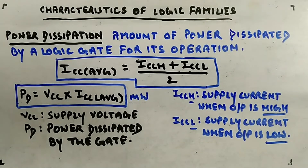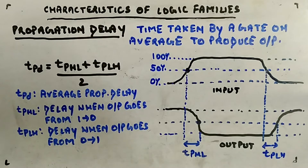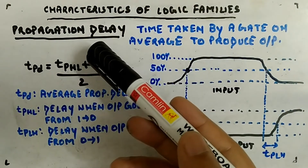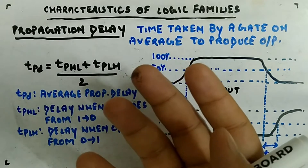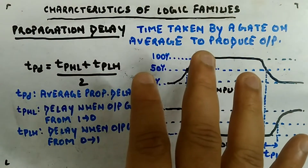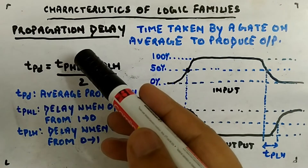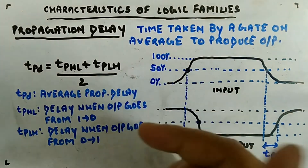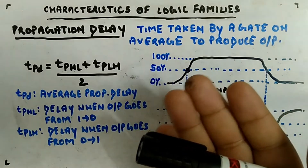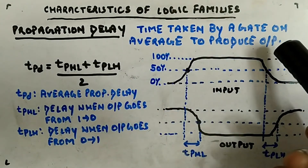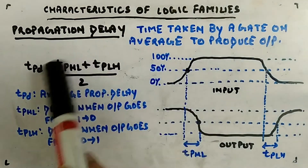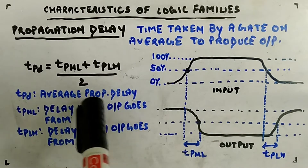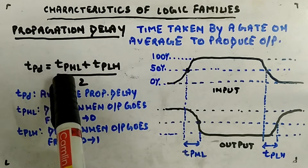Next is propagation delay — similar to what we've seen before for gates, but let's review it. Propagation delay is the time taken by a gate on average to produce output. TPD (average propagation delay) is the average of two values: TPHL and TPLH. TPHL is the propagation delay when the output goes from high to low, and TPLH is the propagation delay when the output goes from low to high.